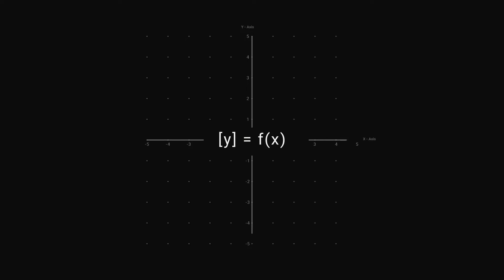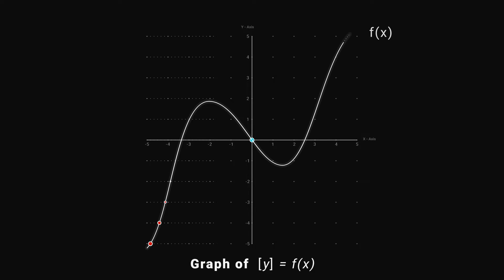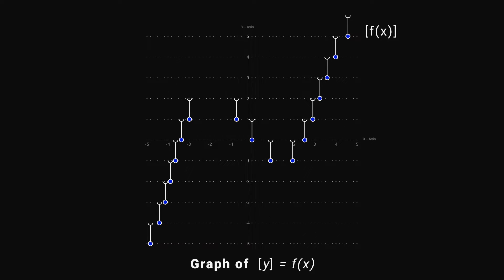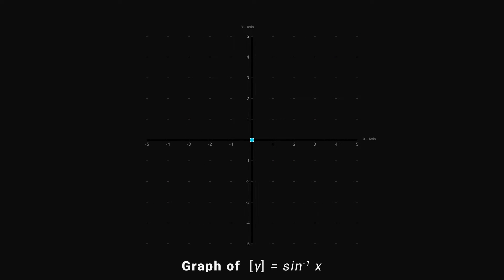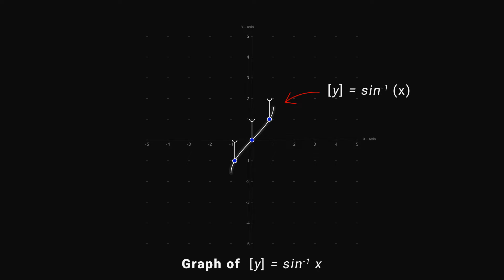Now let's learn how to draw this. For this, we check only the points for which f(x) is an integer, then draw one-unit line segments toward the upper end. For example, let's draw this function. As we know, the graph for this function is given. Now mark all the points for which f(x) is an integer and draw these one-unit line segments. This is our graph.